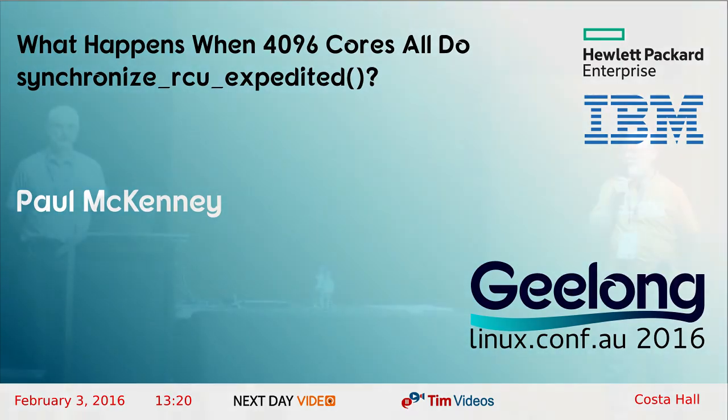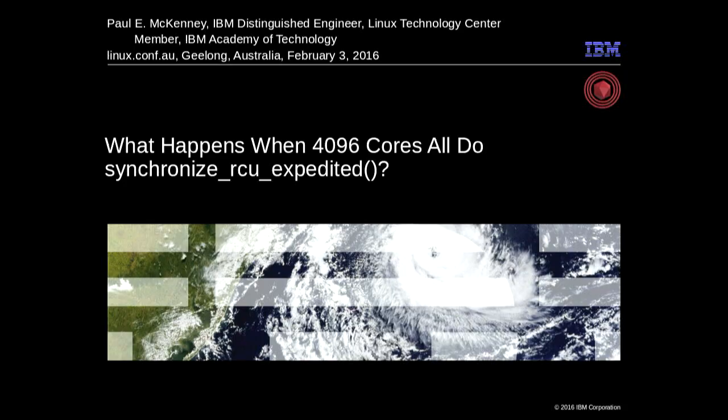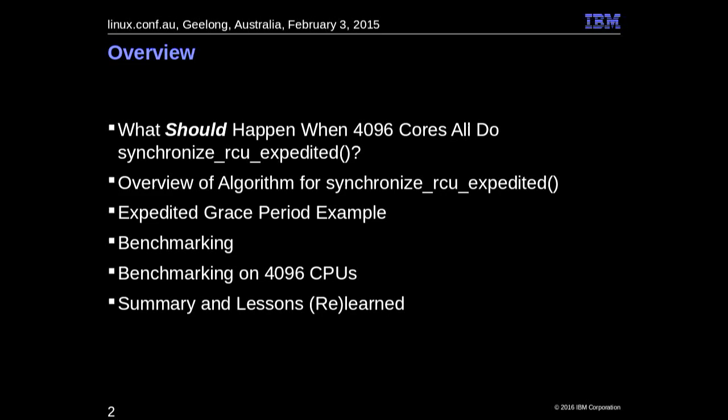Good afternoon. We have Mr. Paul McKinney here to give our next presentation. Please make Paul welcome. Thank you all. So we're going to talk a little bit about what happens, or at least what's supposed to happen, when 4096 CPUs all do synchronized RCU expedited. The idea is to show a snapshot of work to make this hopefully work well, and also to show some things that might be useful in your work. We're going to go through a few things: figure out what should happen, look at an algorithm, examples, benchmarking, and then see how we did.